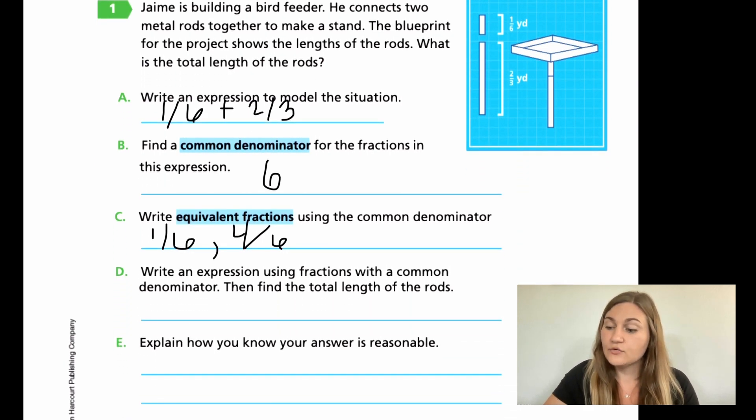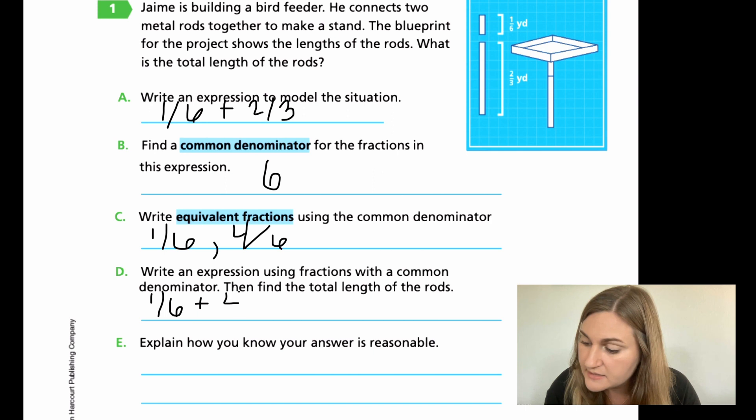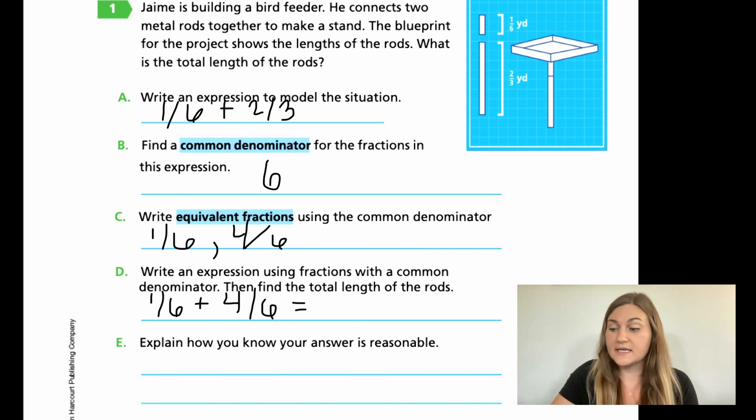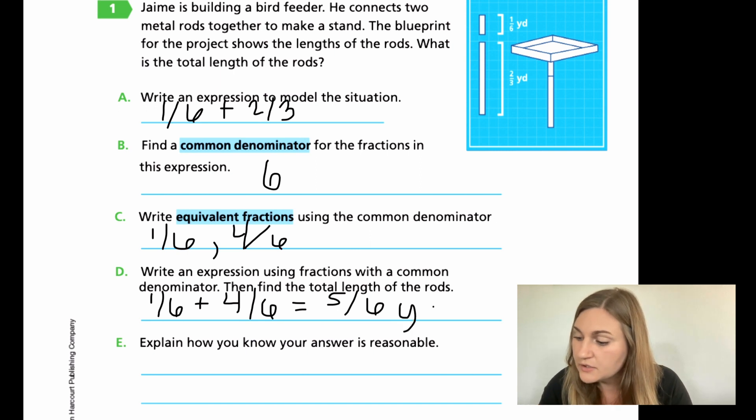All right, so moving into D, write an expression using fractions with a common denominator. So just the expression for right now. So we're adding those two equivalent fractions from up above. Our one-sixth plus our four-sixths. And the second part of that problem says, then find the total length of the rods. Okay, now we need to solve it. So this is equal to, well, one-sixth plus four-sixths. They both have the same denominator. Go ahead and just add. So one plus four is five-sixths. And the total length that we were using was yards, so I need to include my units because it is a word problem.